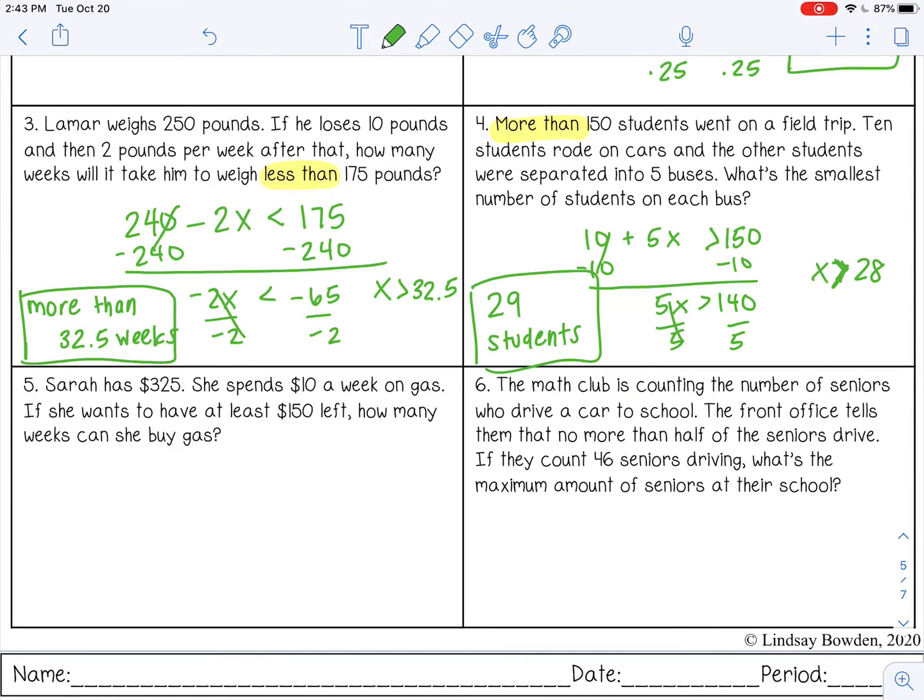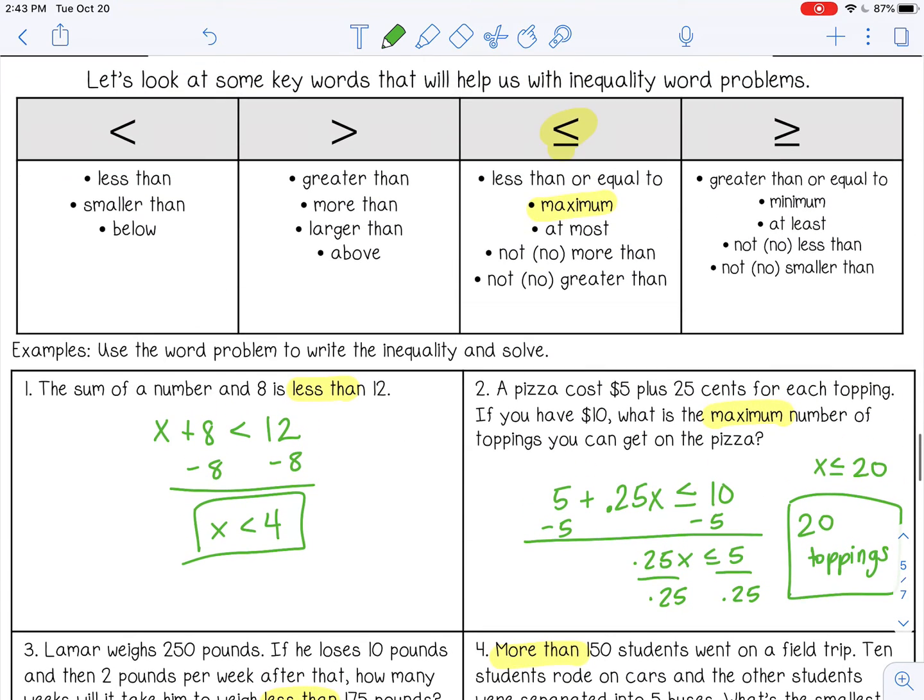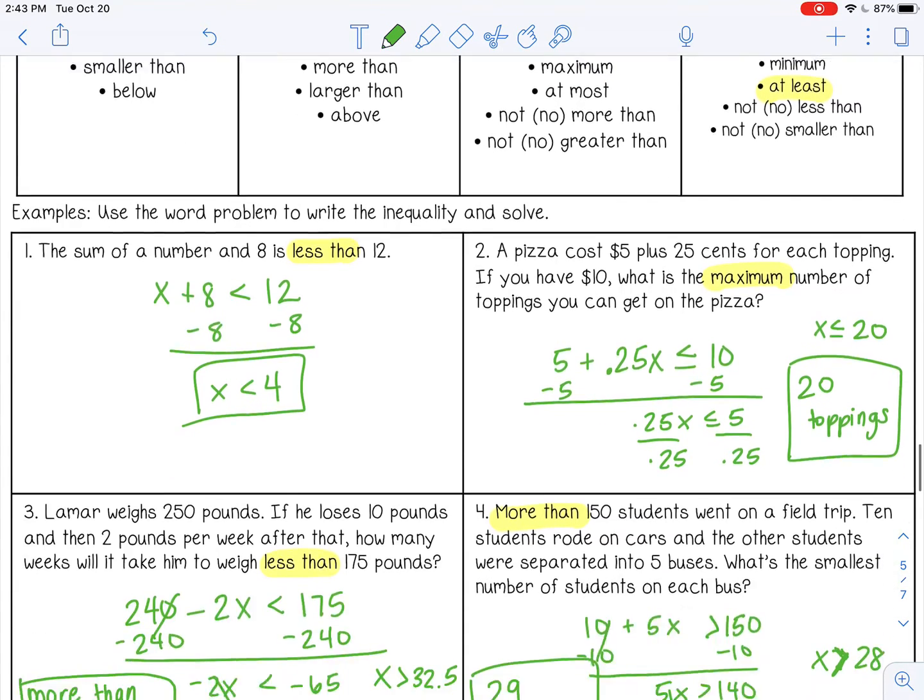Number 5. Sarah has $325. She spends 10 a week on gas. If she wants to have at least, there's my key phrase, 150 left, how many weeks can she buy gas? So she wants to have at least 150. So let's scroll up and see, at least, that's right here. So that's greater than or equal to, at least 150.